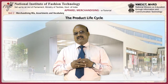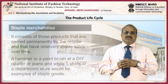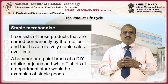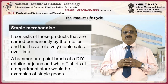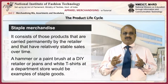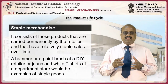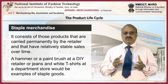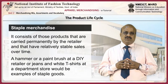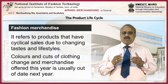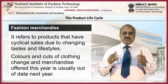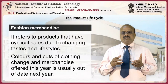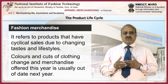Merchandise is of different kinds. Let us review some of them. Staple merchandise consists of those products that are carried permanently by the retailer and have relatively stable sales over time. A hammer or a paintbrush at a DIY retailer, or jeans and white t-shirts at a department store, would be examples of staple goods. Fashion merchandise refers to products that have cyclical sales due to changing tastes and life cycles. Colors and cuts of clothing change and merchandise offered this year is usually out of date next year.